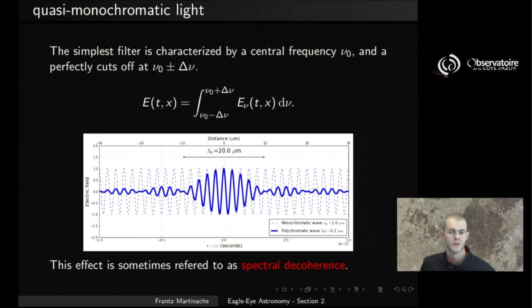This is an effect that is sometimes referred to as spectral decoherence. Somehow, by using a larger wave band, it looks like we are losing coherent properties of the light.